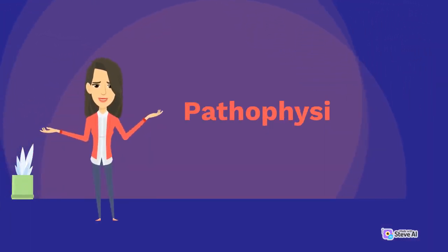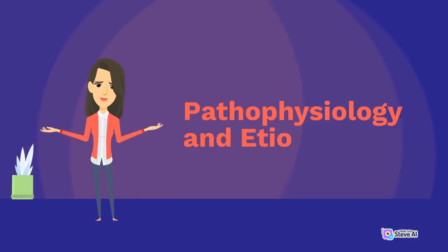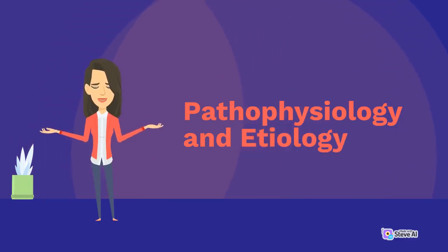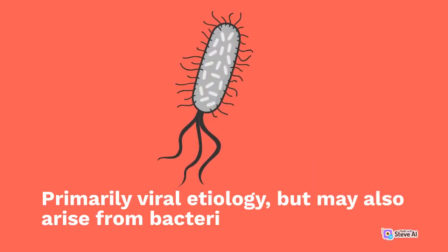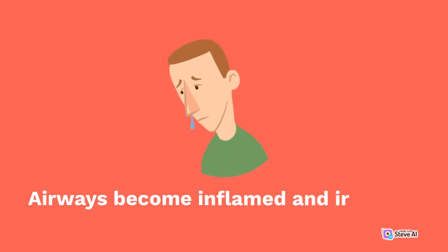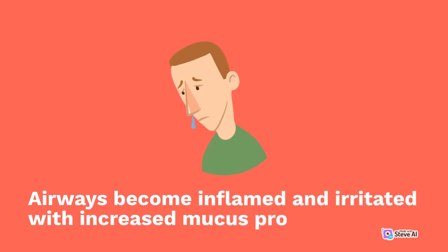Pathophysiology and etiology. Acute bronchitis is primarily of viral etiology, but may also arise from bacterial agents. Airways become inflamed and irritated with increased mucus production.